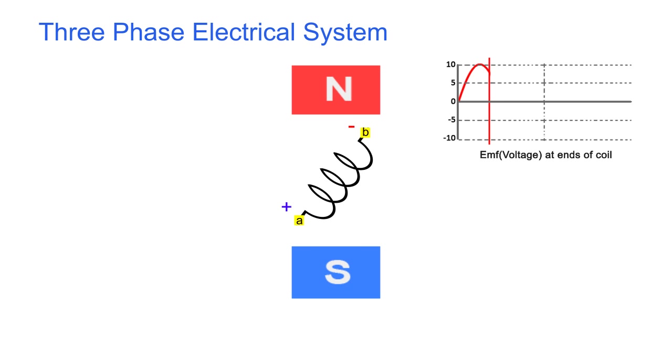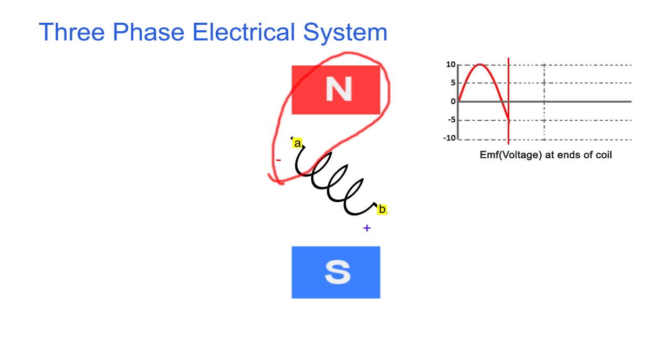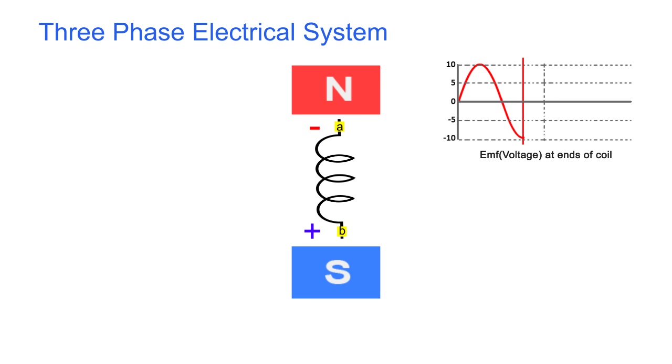At this position, EMF gets reduced and finally becomes zero. The coil continues its rotation and again an EMF is induced in the coil, but the polarity gets reversed because this side is now linking with the north pole and this side with the south pole. So in this way, alternating EMF is generated at the ends of the coil.